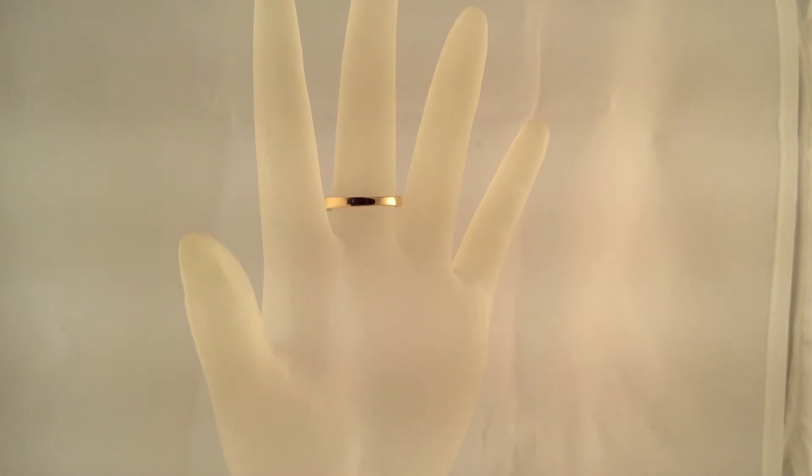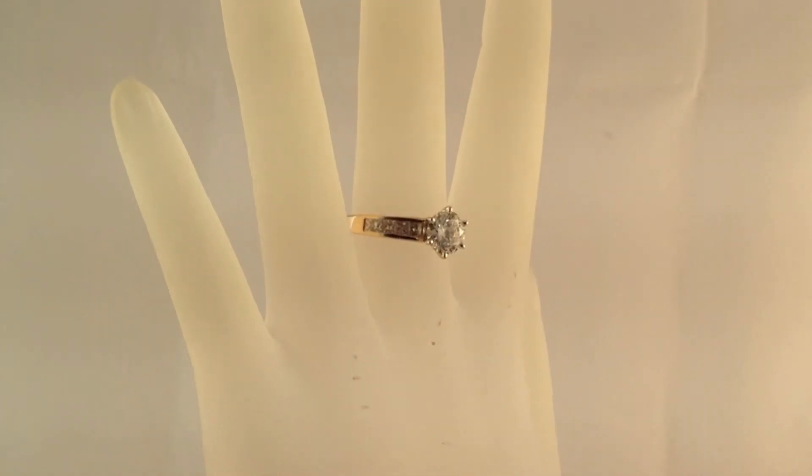There are also 10 genuine and natural princess cut diamonds running down the shank of the ring, five on each side of the main diamond. These diamonds have a total combined weight of 1.20 carats and are VS2 in clarity and H in color as well.